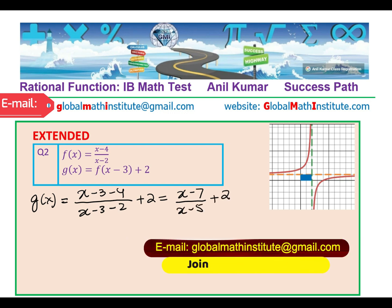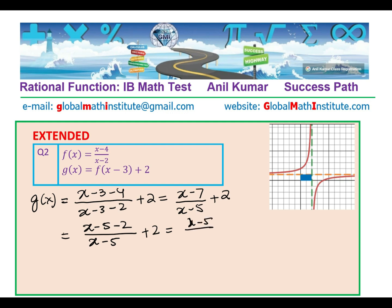Which means (x-7)/(x-5) + 2. And now you could rewrite this as (x-5-2)/(x-5) + 2. Let me write first (x-5)/(x-5). Minus 2/(x-5) + 2. And that gives, this is also 1, 1 plus 2 is 3. And so we get -2/(x-5) + 3.